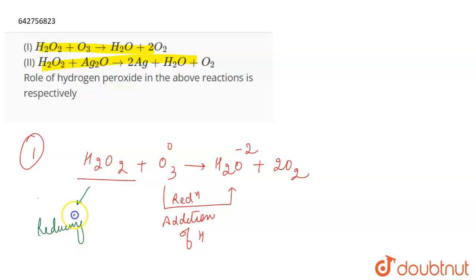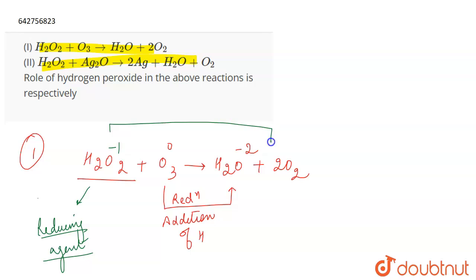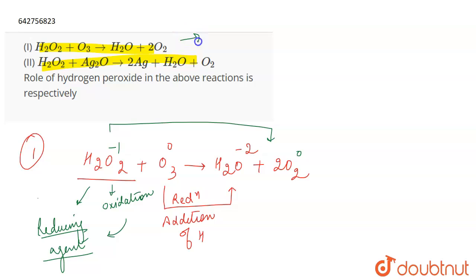H₂O₂ is helping O₃ undergo reduction, so it acts as a reducing agent. This means H₂O₂ is itself getting oxidized — oxygen goes from the minus 1 oxidation state in H₂O₂ to the 0 oxidation state in O₂, so the oxidation number is increasing. Therefore, H₂O₂ undergoes oxidation and acts as a reducing agent in the first reaction.